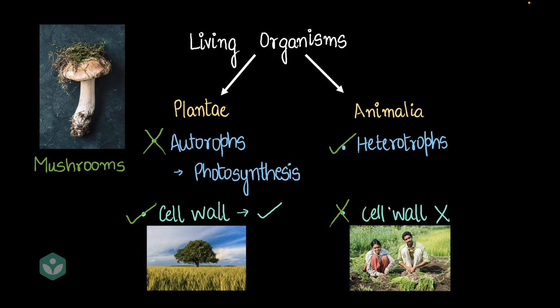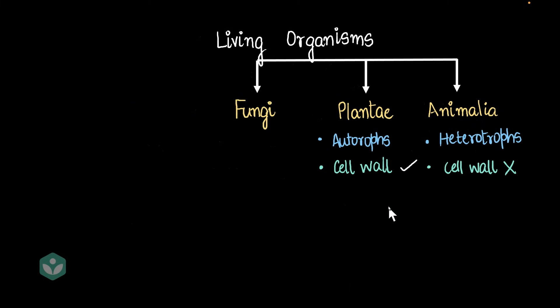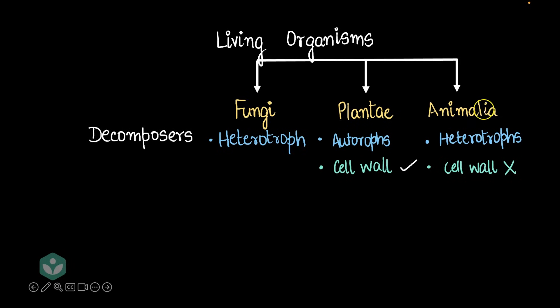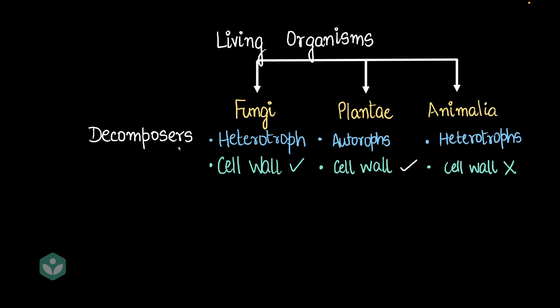So we're stuck and we need a third category. We make a third category called fungi. Fungi are heterotrophs — they are actually decomposers. Fungi don't eat living organisms like animalia may; fungi eat dead organisms. They are decomposers of dead and decaying organic matter. Fungi have a cell wall, and there's one interesting fact: their cell wall is not made of cellulose, it's made of chitin.